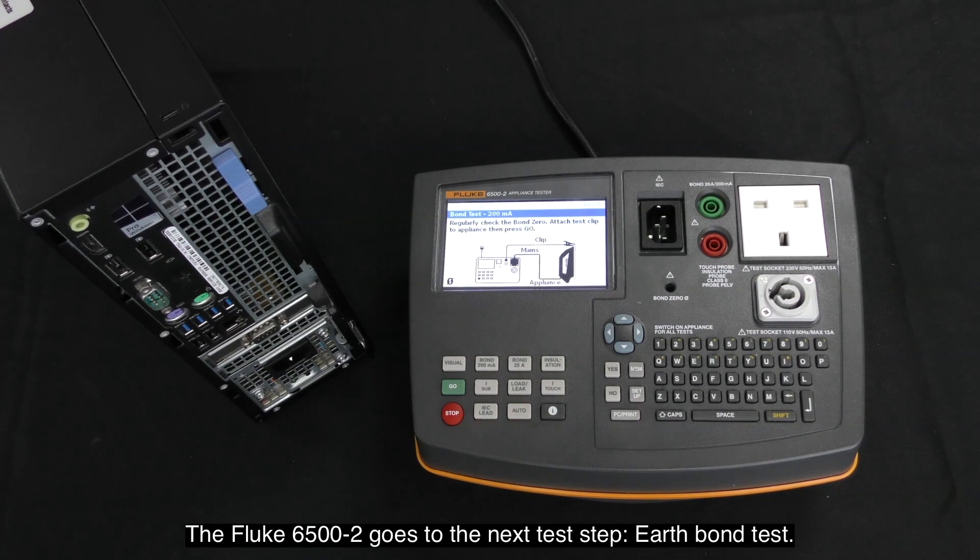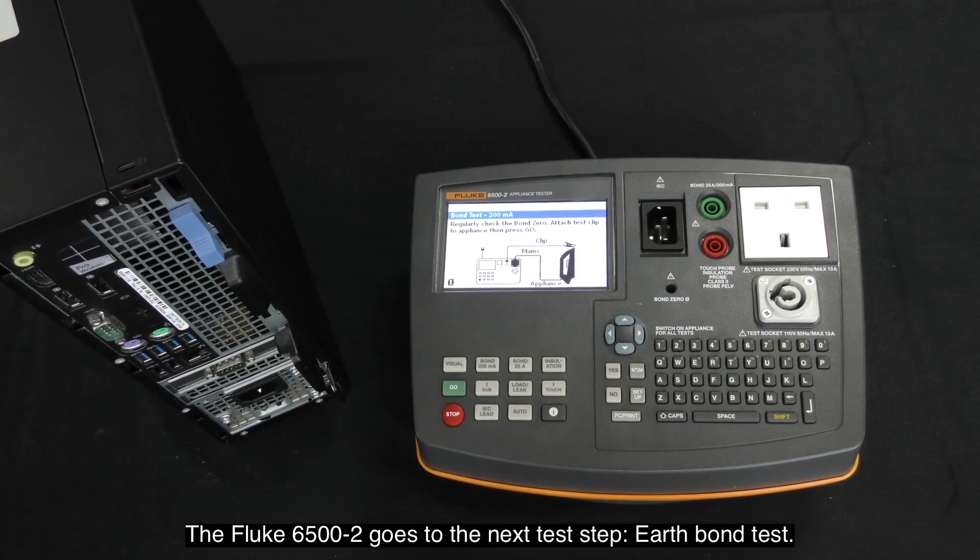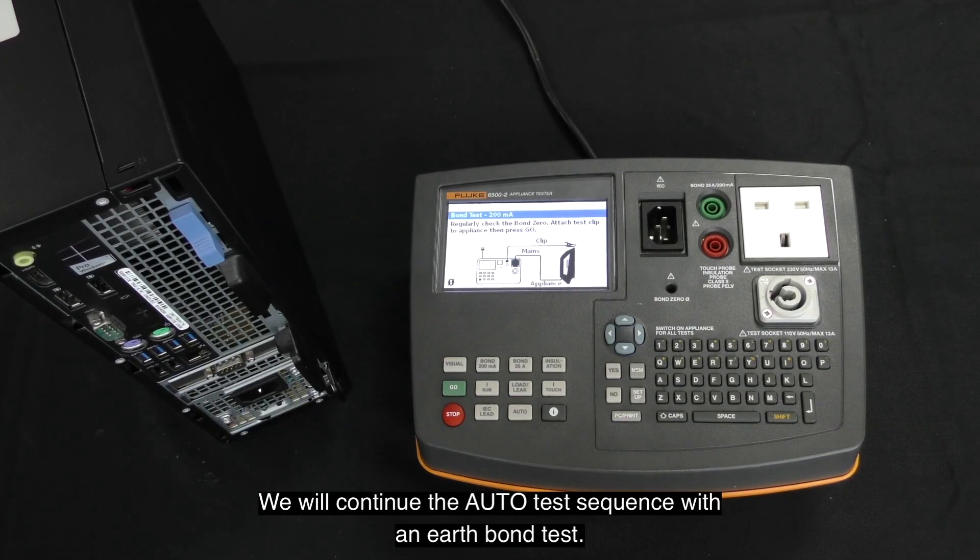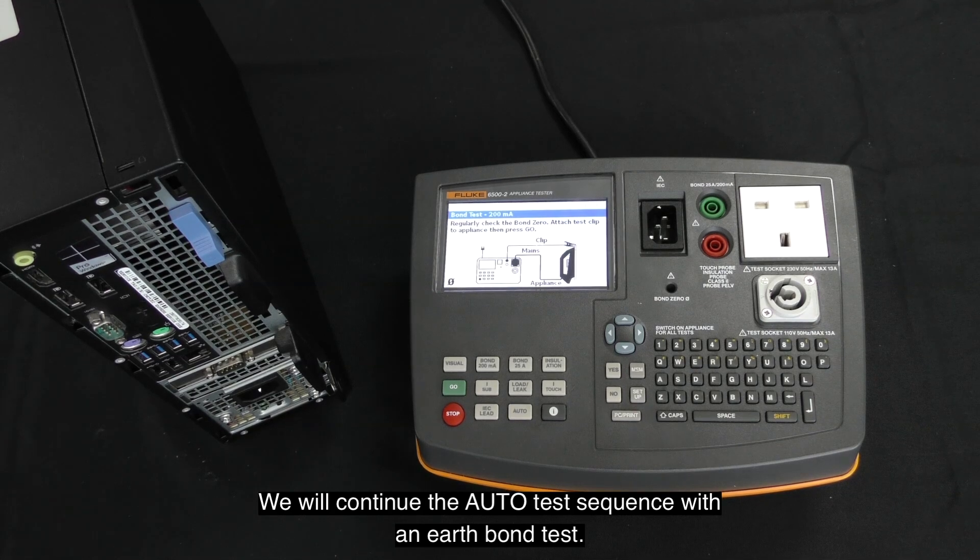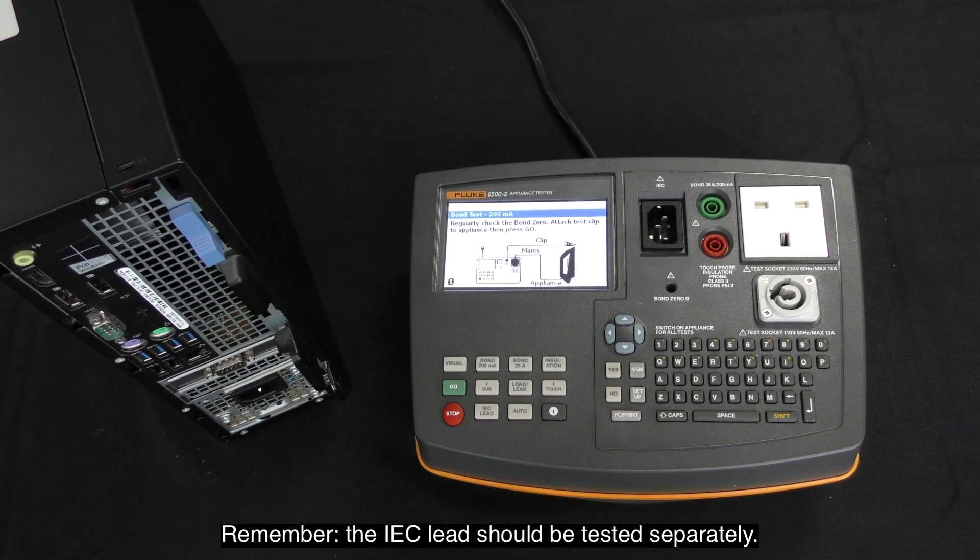Confirm the positive outcome of the test by pressing the S key. The Fluke 6500 Mark II goes to the next step, the earth bond test. We will continue the auto test sequence with an earth bond test. Remember, the IEC lead test should be tested separately.